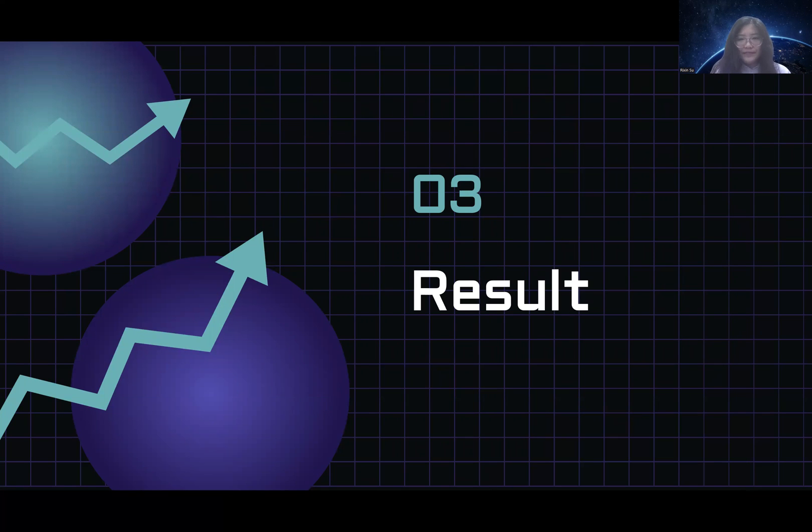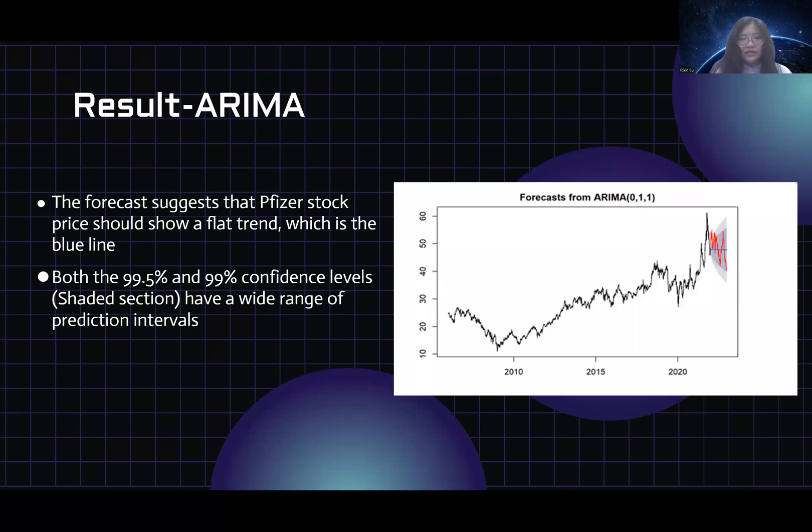And then let's move on to the result part of my research, which is the result. This slide shows the result of ARIMA model. We can see that the ARIMA model prediction shows the Pfizer stock price should show upward trend, which is the blue line. But it doesn't fit well to the red line, which is the real price.